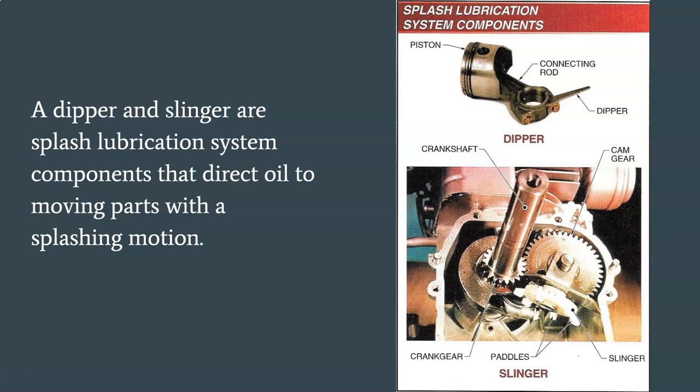A splash lubrication system is an engine lubrication system in which oil is directed to moving parts by a splashing motion. Splash lubrication systems are simple in design and are commonly used on horizontal and vertical shaft engines. Oil is directed to bearing surfaces with a dipper or slinger. A dipper is an engine component attached to the connecting rod which directs oil from the oil reservoir to bearing surfaces. The dipper enters and exits the oil reservoir as the piston travels to and from bottom dead center to splash and distribute oil throughout the crankcase.